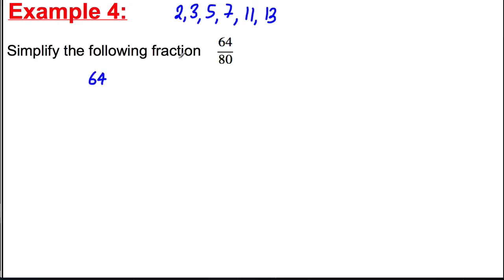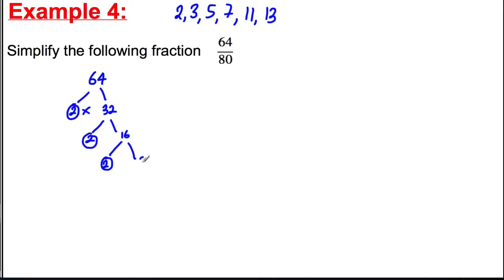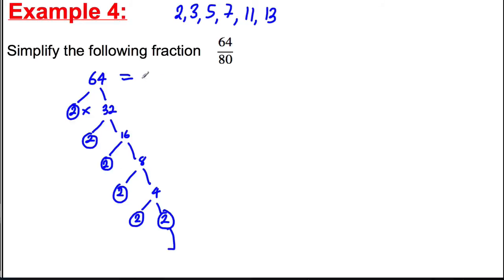For 64: does 2 go into it? Yes, 32 times. 32 is not prime, so does 2 go into it? Yes, 16 times. 16 is not prime, so does 2 go into it? Yes, 8 times. Does 2 go into 8? Yes, 4 times. 4 is not prime. Does 2 go into 4? Yes, 2 times. Therefore, 64 is 2 times 2 times 2 times 2 times 2 times 2 — written as a product of primes.